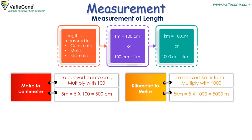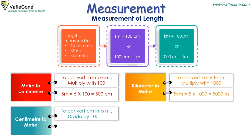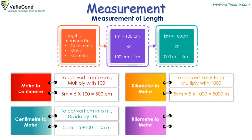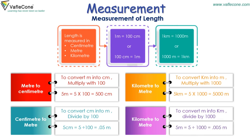To convert centimeter into meter, divide by 100. For example, 5 centimeters is equal to 5 divided by 100, which equals 0.05 meters. To convert meter into kilometer, divide by 1000. For example, 5 meters is equal to 5 divided by 1000, which equals 0.005 kilometers.